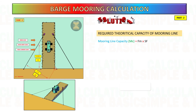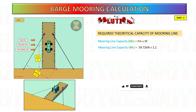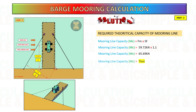This is the theoretical capacity of mooring line required. To get the mooring line capacity, multiply by a safety factor — I consider a 10 percent contingency.